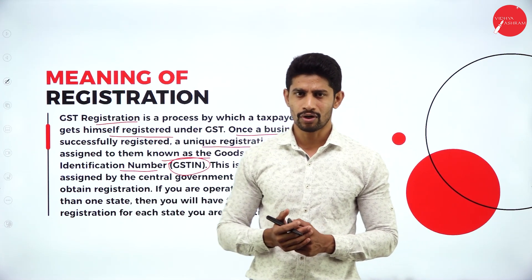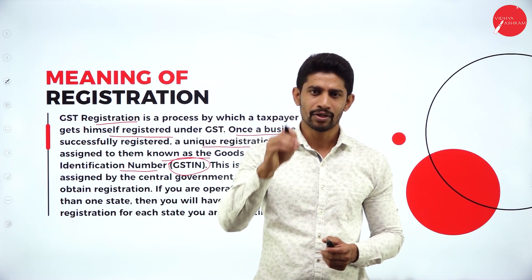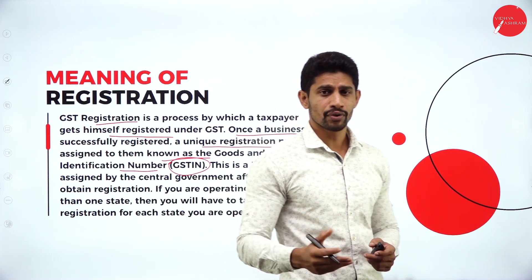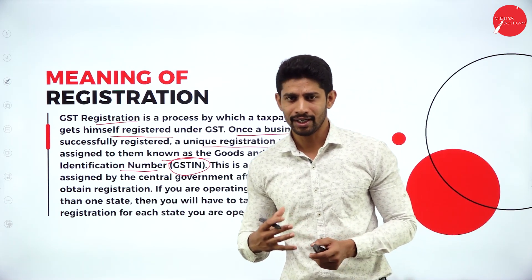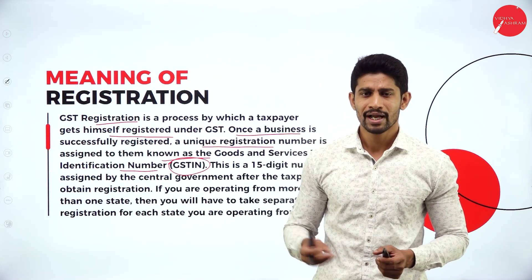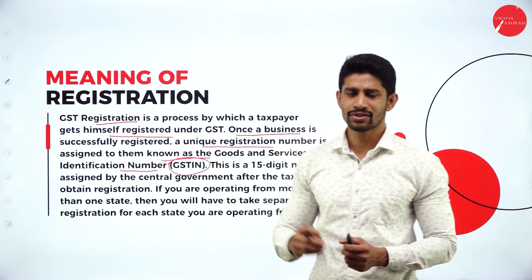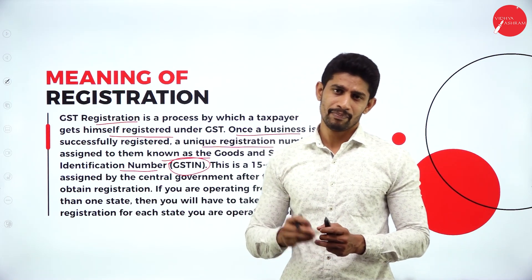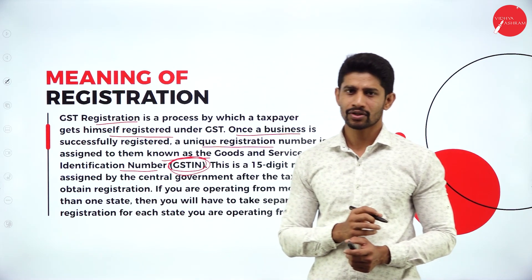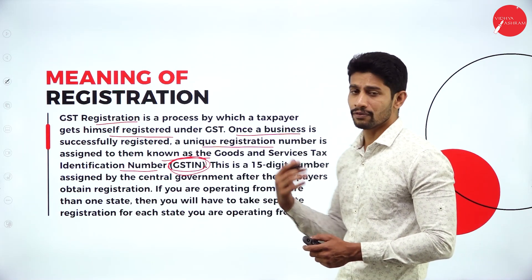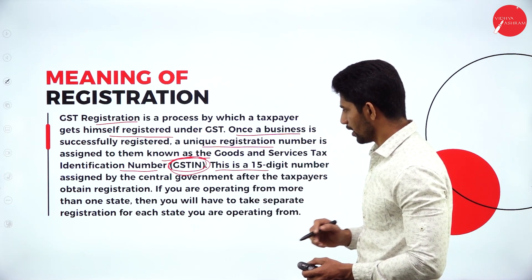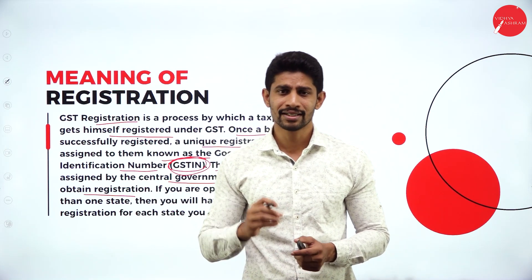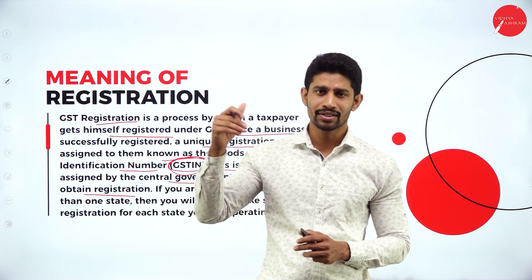If you want to admit your brother to a college, you go to the college, take the application, and pay the fees — then he becomes a student and can attend classes. Without registration or admission it is not possible. Similarly, to get all the facilities from the GST authority as a business entity, you must first register. Once registered, they will issue you a unique 15-digit alphanumeric number — the GSTIN — assigned by the central government.